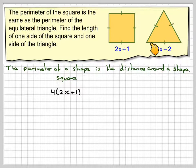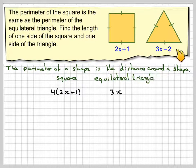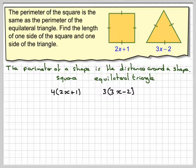An equilateral triangle is a triangle where all three lengths are the same. Therefore, the perimeter of an equilateral triangle will be 3x minus 2 times 3. Now the perimeter of this shape is the same as this shape.